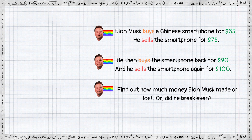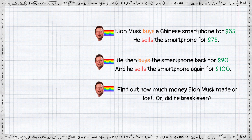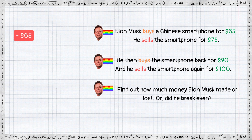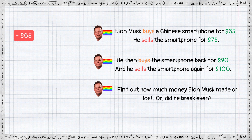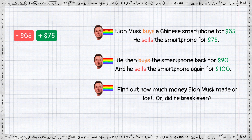Let's start with the first transaction. He buys a Chinese smartphone for $65. We can interpret this as a negative $65. He sells the smartphone for $75, so he then gets plus $75, which results in a profit of $10.